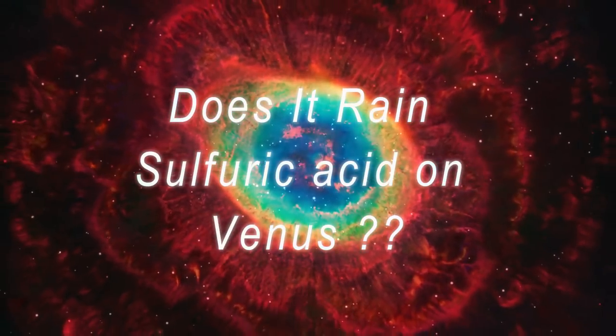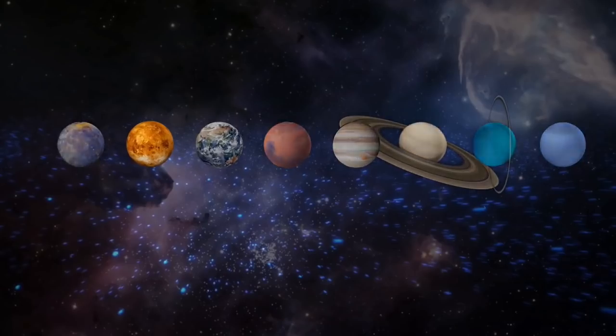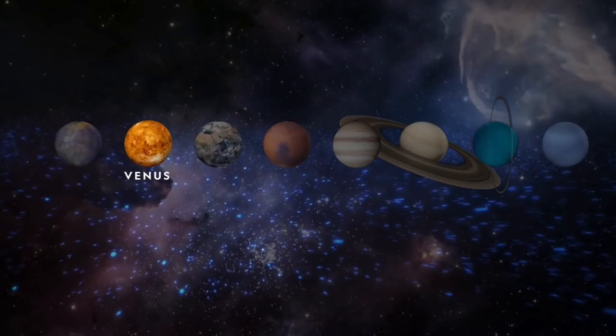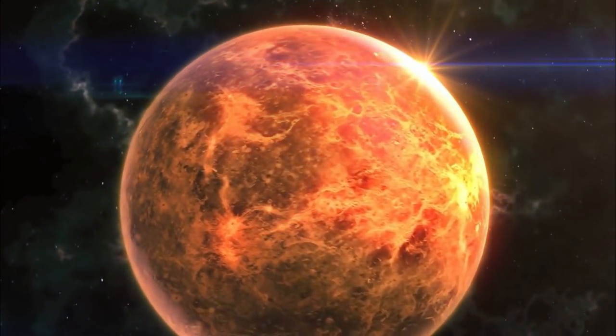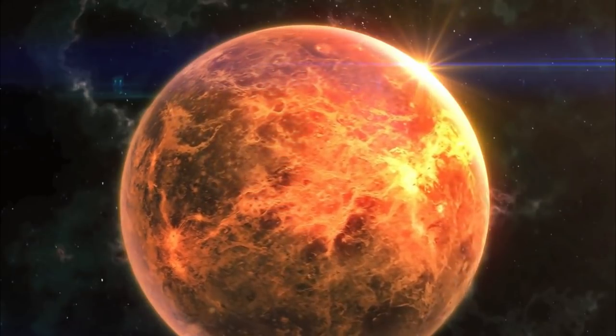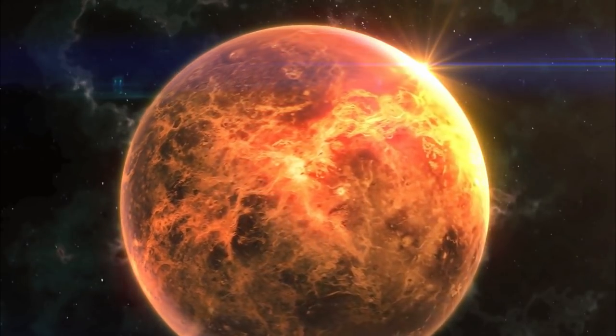Does it rain sulfuric acid on Venus? Venus is the second planet from the Sun, and the temperature on Venus is at least 462 degrees Celsius, much higher than that of Mercury, which is much closer to the Sun.